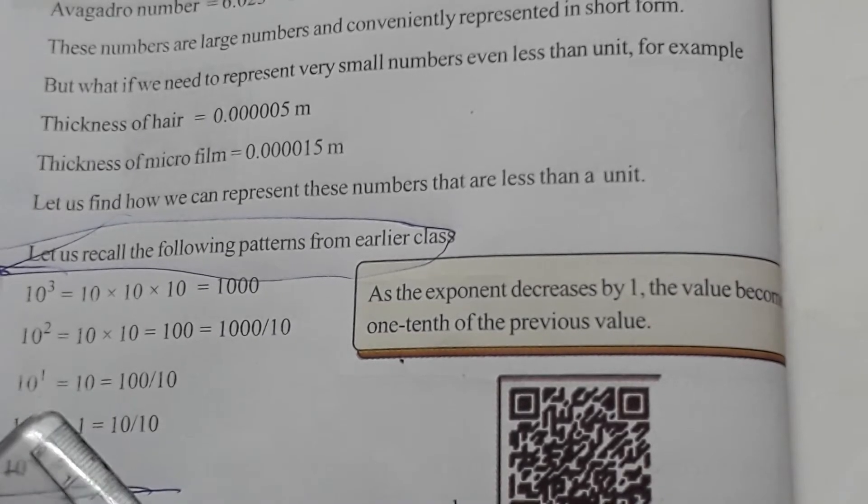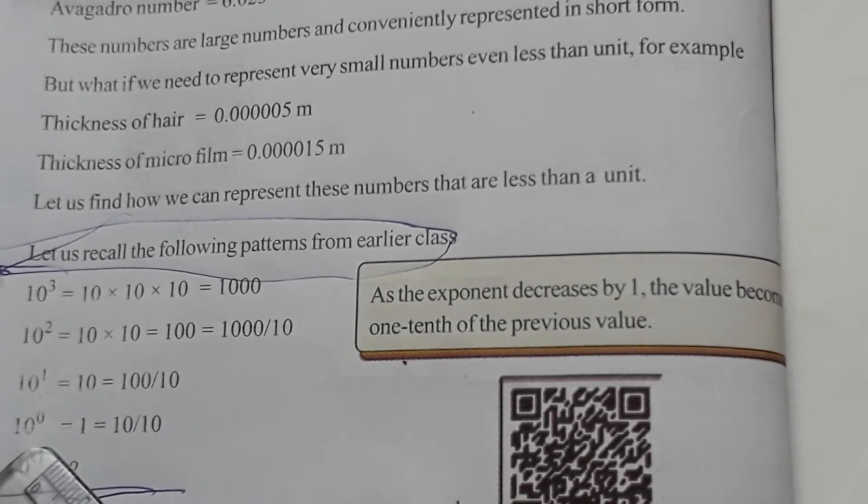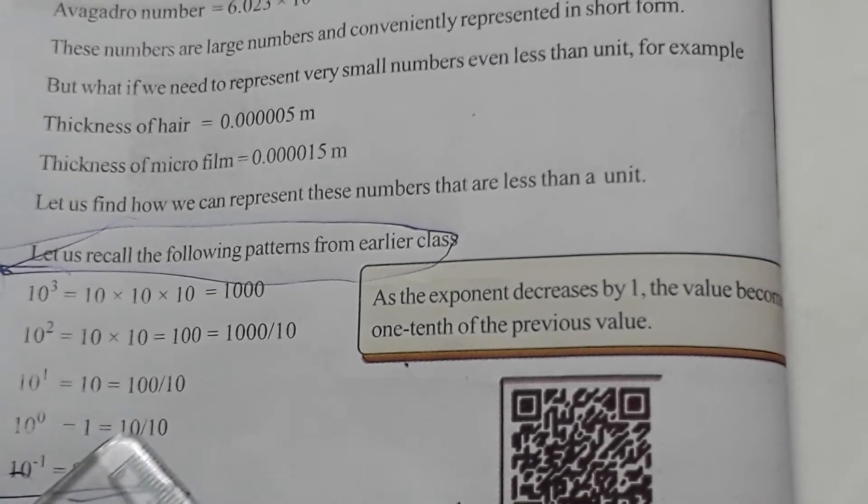0, 0 cancel. 10¹ is equal to 10, is equal to 100 by 10. 10⁰ is equal to 1, equal to 10 by 10.